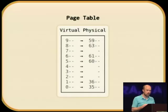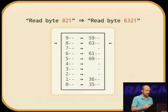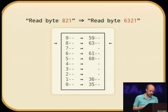Here's an example. The addresses that your process asks for are called virtual, and the actual addresses delivered to RAM are called physical. This example page table only looks at the leading digits. Your process attempts to read byte 821; the RAM chip actually sees a request for 6321. The process tries to read byte 190; instead, the RAM chip would see a request for 3690.